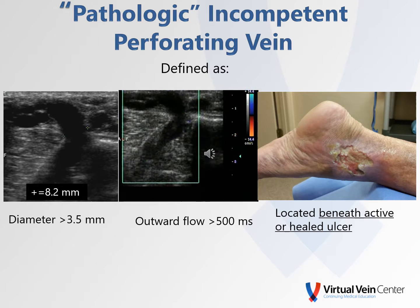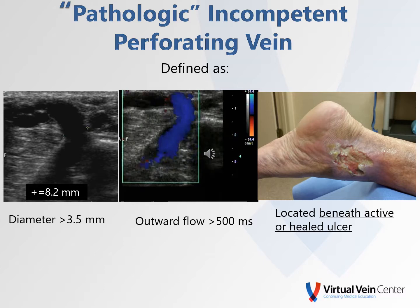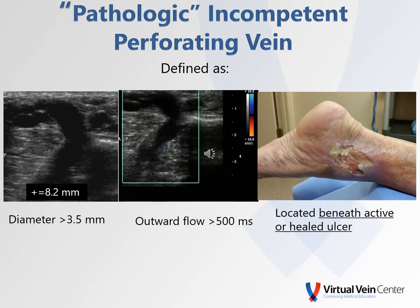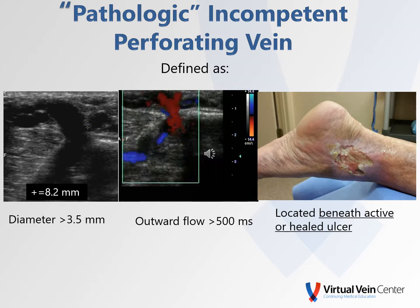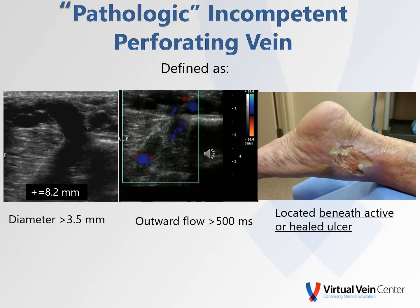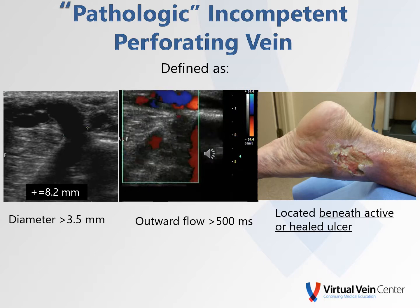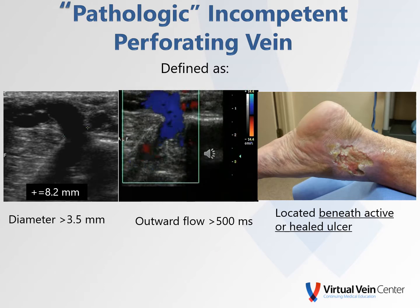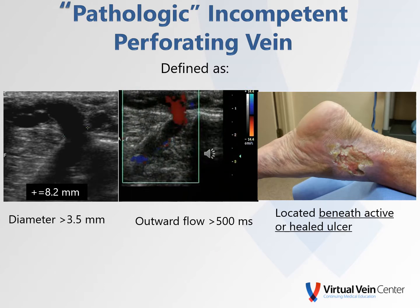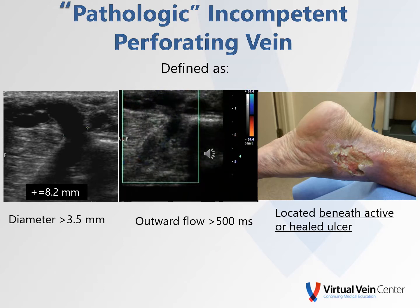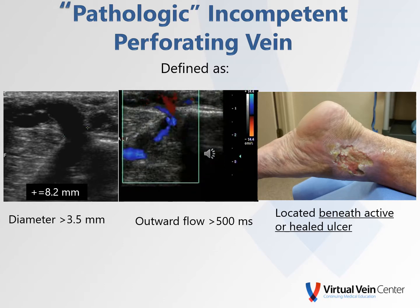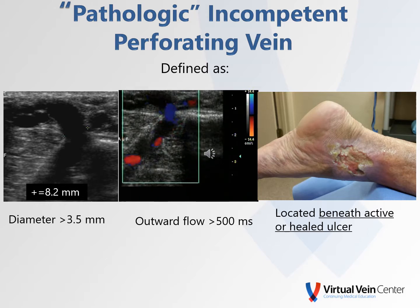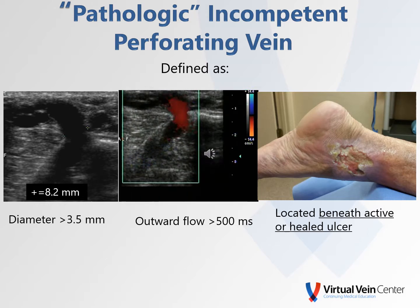A pathologic incompetent perforating vein is defined as one that is greater than three and a half millimeters in diameter, exhibits retrograde or outward flow from deep to superficial system greater than a half a second or 500 milliseconds, and is located beneath an active or a healed ulceration. So you need to know what the skin condition is of that patient before you can define a pathologic perforating vein.